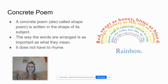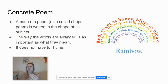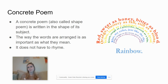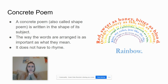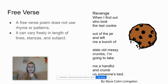This is one of my favorites — it's called a concrete poem, also known as a shape poem. It's written in the shape of its subject, and the way the words are arranged is just as important as what they mean. It doesn't have to rhyme. This example is in the shape of a rainbow, and the words describe each color of the rainbow. So if you were doing one about football, the words and lines would all be constructed in the shape of a football.